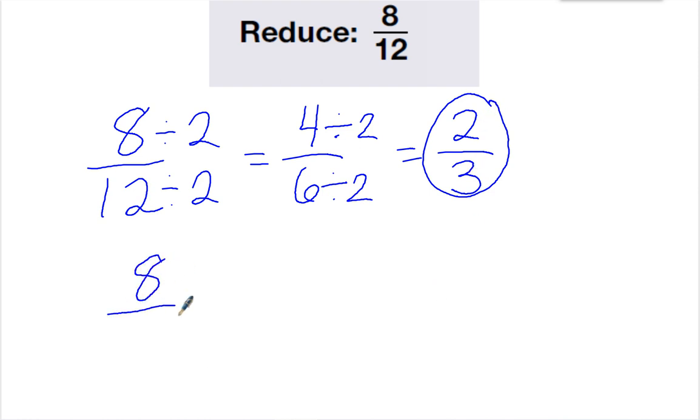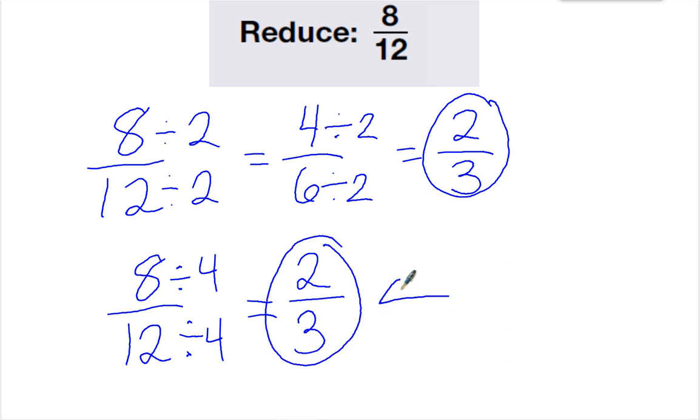Now, if I know the greatest common factor, I know both eight and twelve can be divided by four. Eight divided by four is two, and twelve divided by four is three. So I got the same answer both ways, but this was definitely quicker.